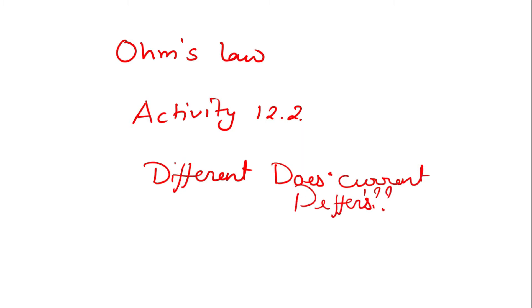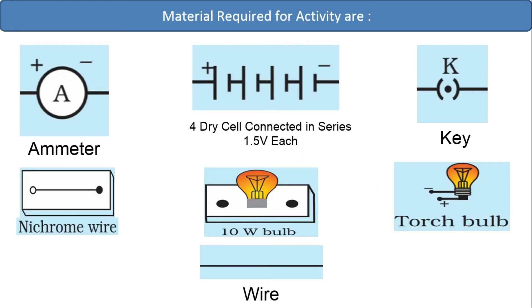The materials required for this activity are: an ammeter, four dry cells connected in series each 1.5 volt, a plug key, a nichrome wire, a 10 watt bulb of current rating 0 to 5 ampere, a torch bulb, and conducting wire.